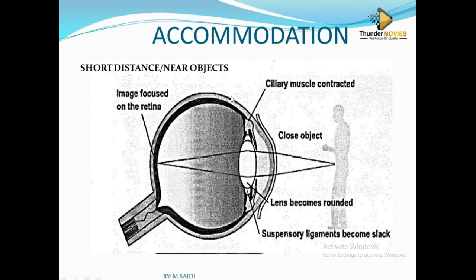When talking about accommodation, there are some parts you need to know. First, you need to know about the lens. You need to know about the retina and the distance of the eye. Then talk about the ciliary muscles, the suspensory ligaments, and the lens. These are the three parts which aid in focusing the object onto the retina.